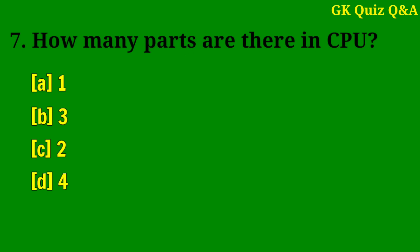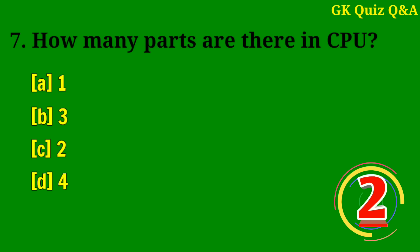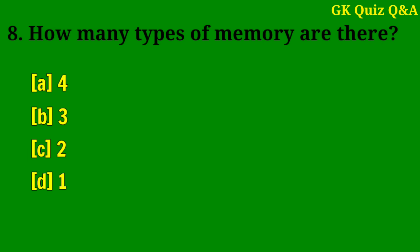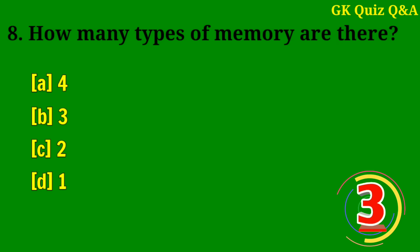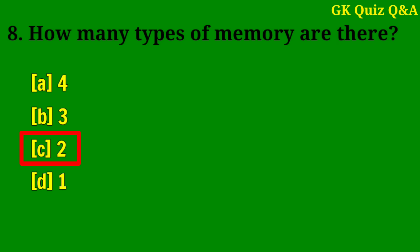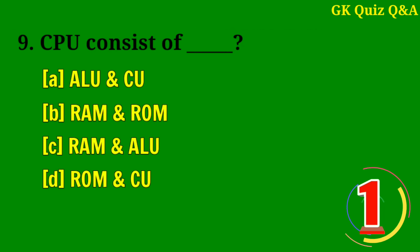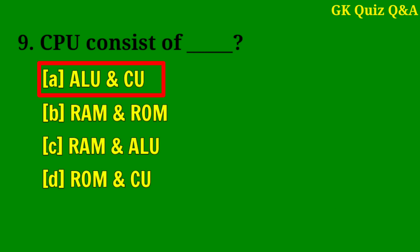How many parts are there in CPU? Answer C: Two parts. How many types of memory are there? Answer C: Two types of memory. CPU consists of? Answer A: Both ALU and CU.